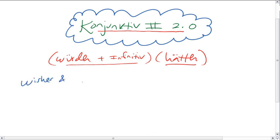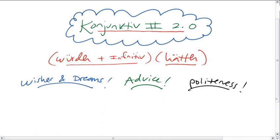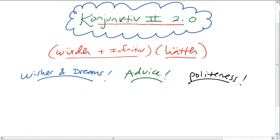So we're going to be talking about Wishes and Dreams, Wünsche und Träume. Or we can also use the Konjunktiv 2 for advice, giving advice. Or we can use it for politeness. Or we could use it for, generally speaking, unreal circumstances. Expressing the hypothetical. So the Konjunktiv 2 can be used for all these purposes.